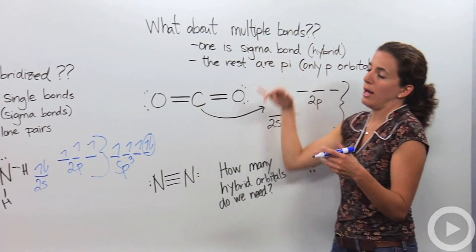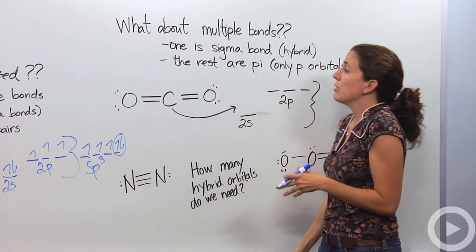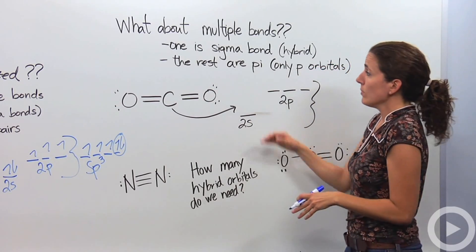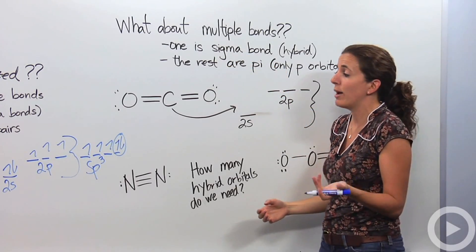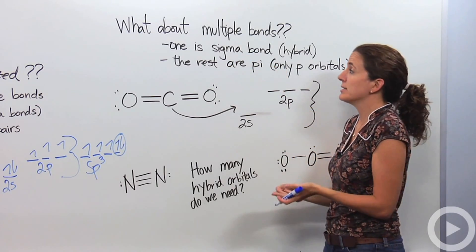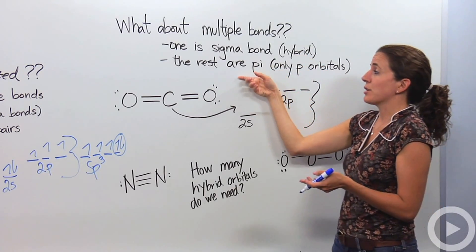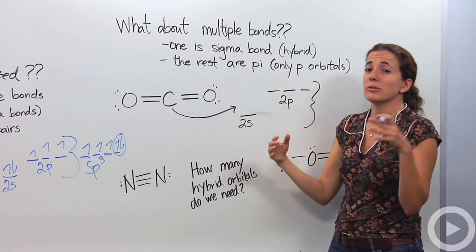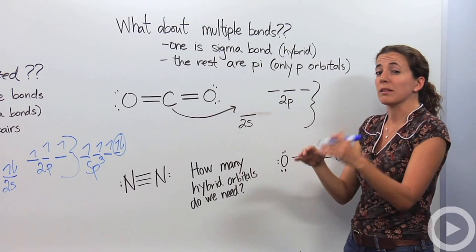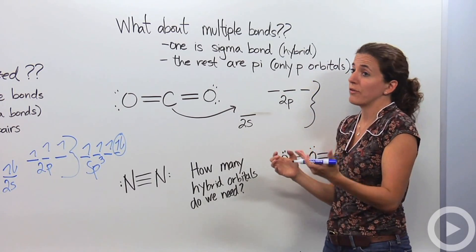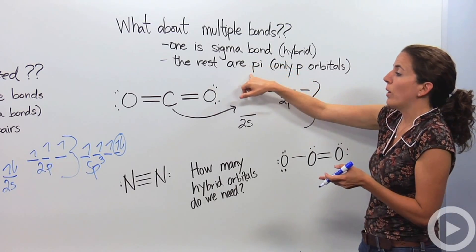What about when we have multiple bonds — double bonds and triple bonds? Within a multiple bond, one of those bonds is called a sigma bond, and sigma bonds are hybridized. The rest of those bonds are called pi bonds. Pi bonds are just p orbitals overlapping each other — they are only p orbitals, a little higher in energy and different in energy. So we keep them separated: one sigma and one pi in a double bond.